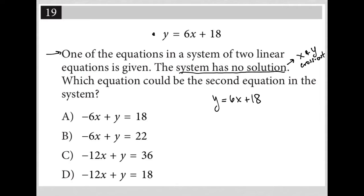So let's see, which equation could be the second equation in the system? Well, looks like they tried to move things around a little bit, but really choice A, if I were to isolate y by adding 6x to both sides, would literally become y equals 6x plus 18.